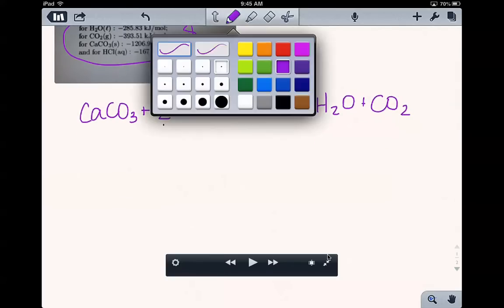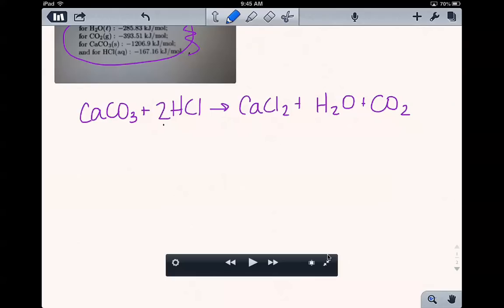So for our cases, let's go to blue, we've got calcium carbonate or calcite has a standard enthalpy of formation of negative 1206.9. And all of these units are kilojoules per mole. And hydrochloric acid is negative 167.16.